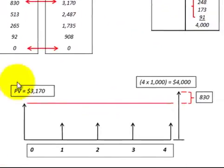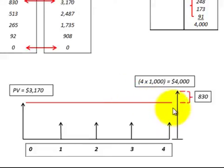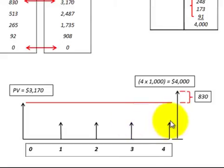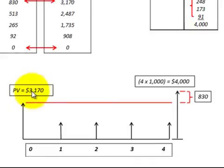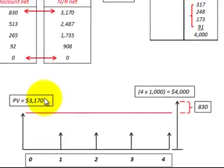Let's look at the cash flow for that notes receivable. We receive four payments each of $1,000 at the end of each of the four years. Then we discount those payments back at an effective interest rate and determine their present value. In this case, it was $3,170.